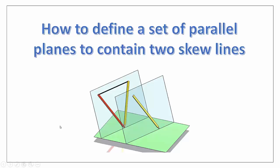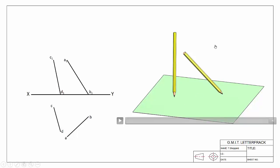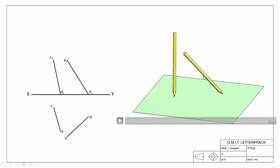We'll start off by looking at a sample. Here we have two skew lines — the elevation and plan view of lines AB and CD — and here is a 3D drawing of the same skew lines, represented as two pencils. If you have two pencils, you can use a bit of blue tack and stick them to the table to use as a little model to help you along.